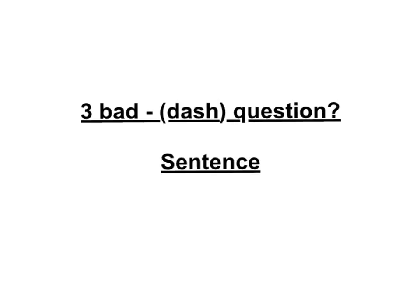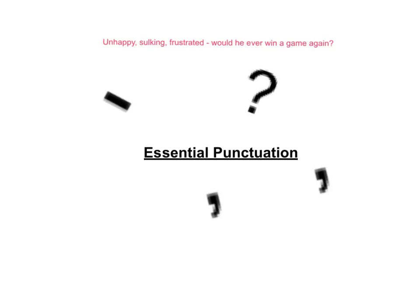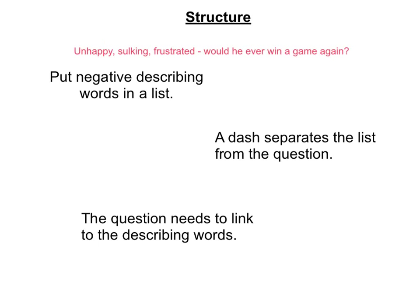The three bad dash question sentence. This sentence type requires the use of two commas, a dash, and a question mark. The structure puts negative describing words in a list at the start of the sentence. There's then a dash, and a question that follows, which links to the describing words at the start of the sentence.